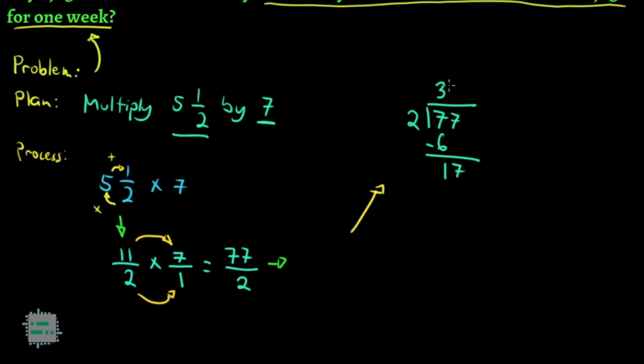16. Meron tayong walong 2 dyan which is 16. 8 times 2 is 16. Tsaka ka mag-subtract meron ka ulit. Remainder na 1.